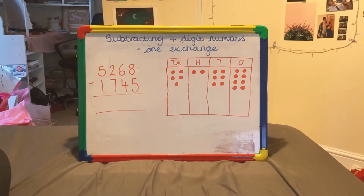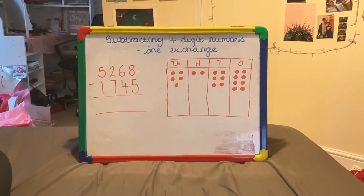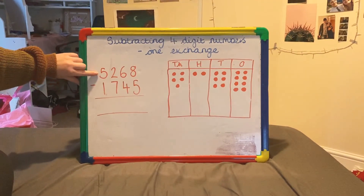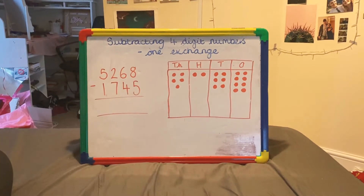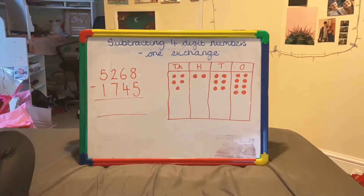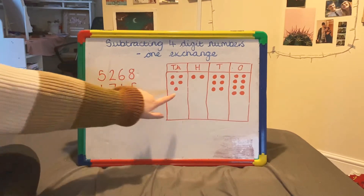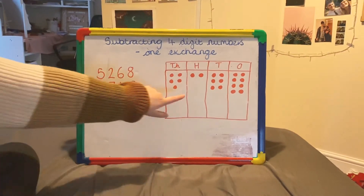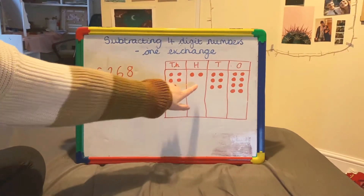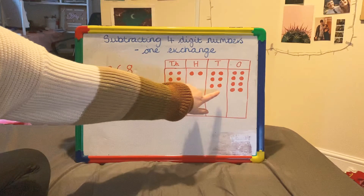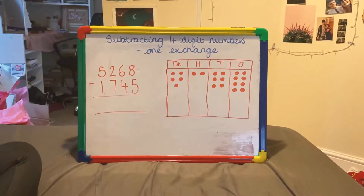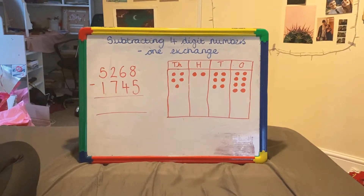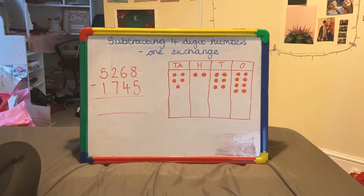Today I've already put my whole number, my top number, inside the place value chart. So we can just check that quickly: 5,000, 200, and 60, and 8. So that's all in the top of my place value chart ready to solve this question.